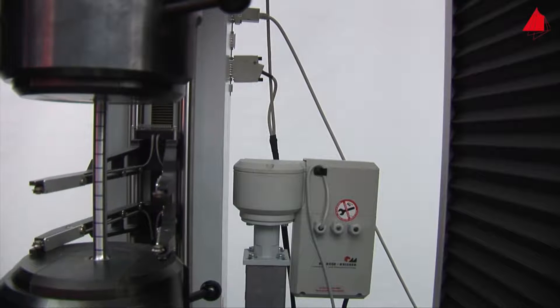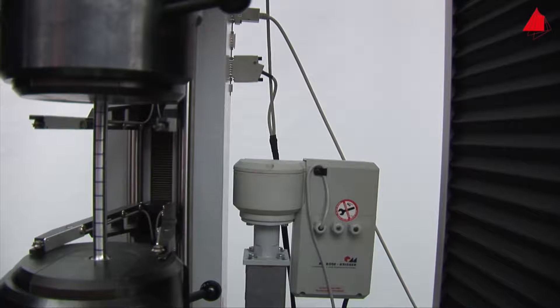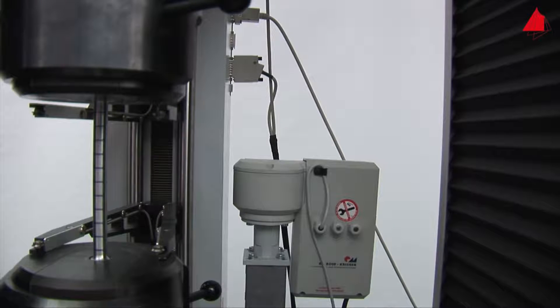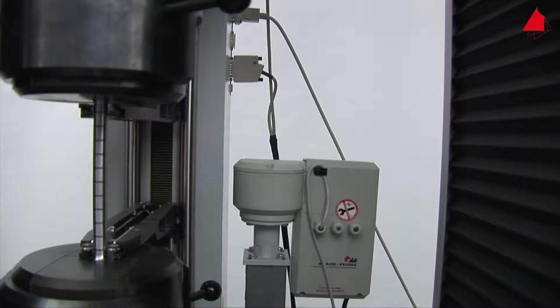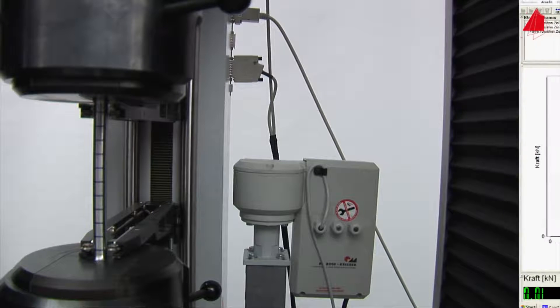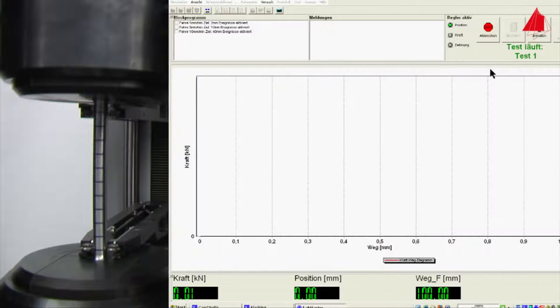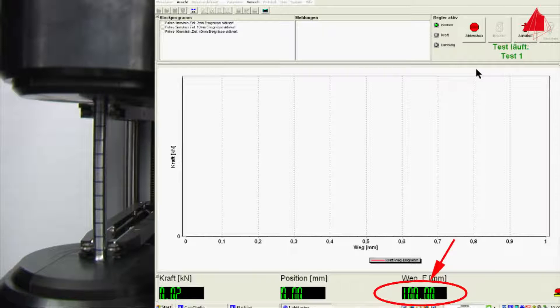Ready. The test starts and the extensometer sensor arms are carefully pressed onto the test piece. This way the gauge length can be measured throughout the whole tensile test. The gauge length is displayed at the bottom right hand corner of the screen. At the beginning it amounts to a hundred millimeters.